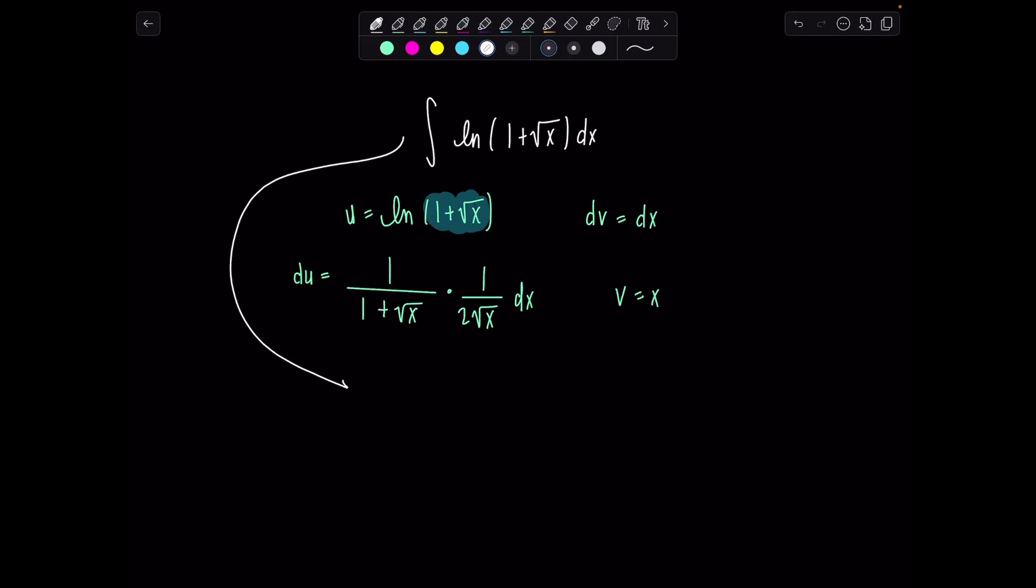So now let's rewrite everything using our bi-parts formula. We'll have x ln(1 plus rad x) minus integral x dx over (1 plus rad x) and then 2 rad x. Okay, so let's think what do we need to do with this guy?